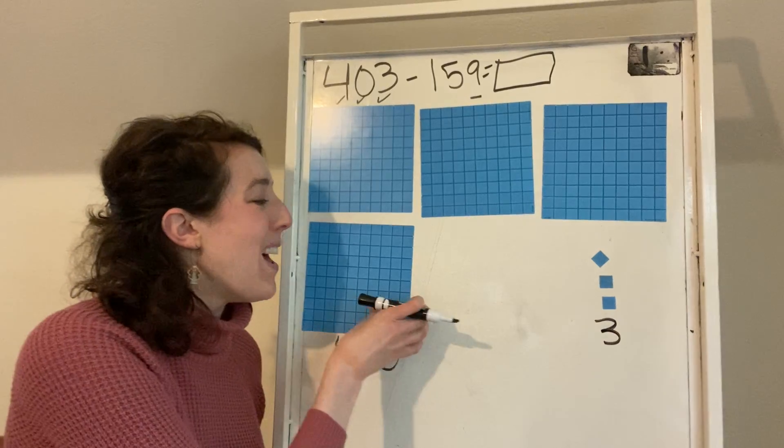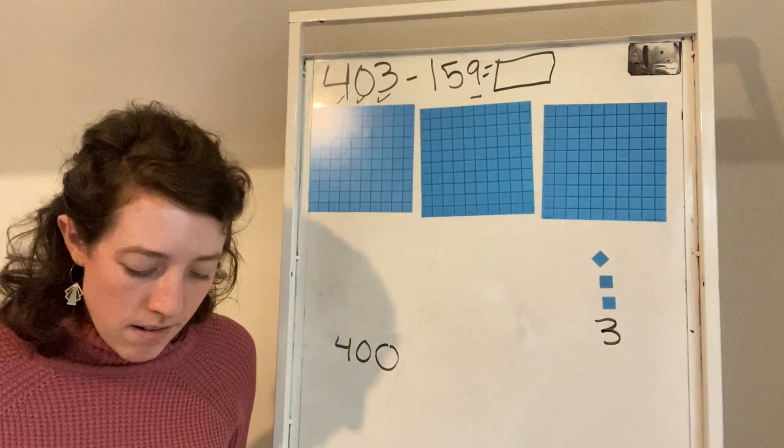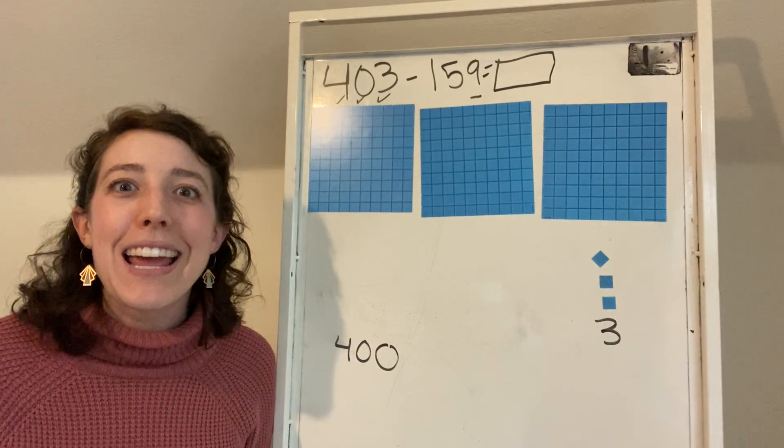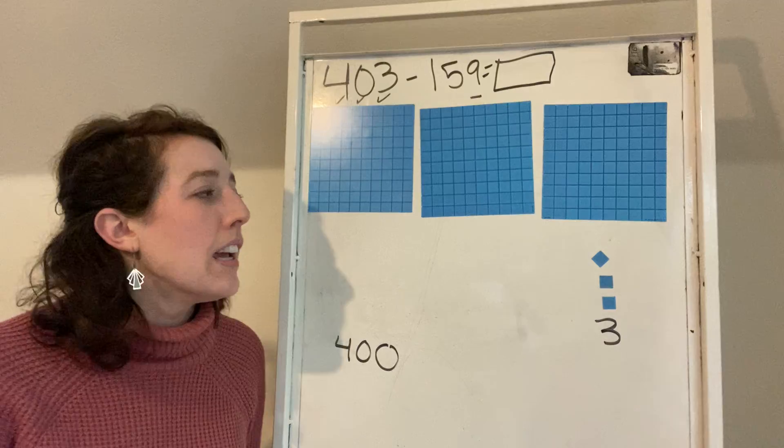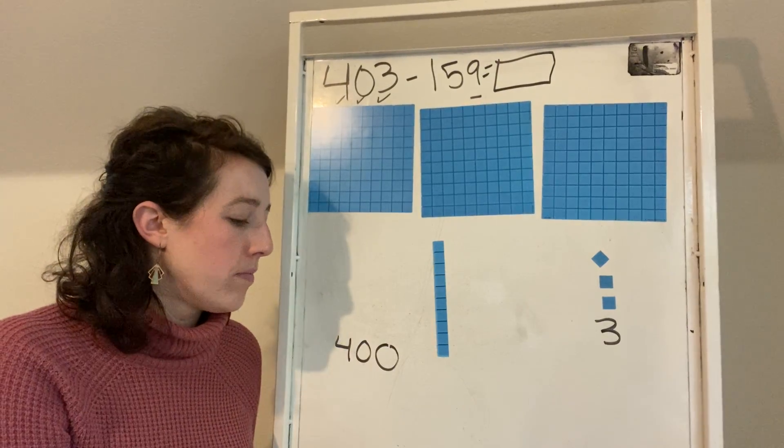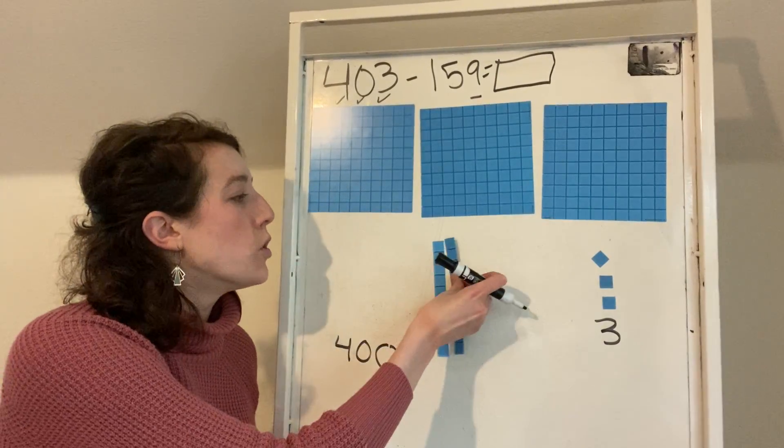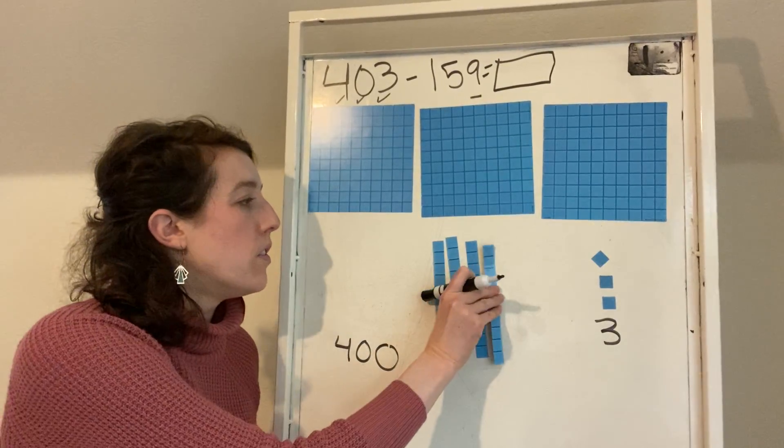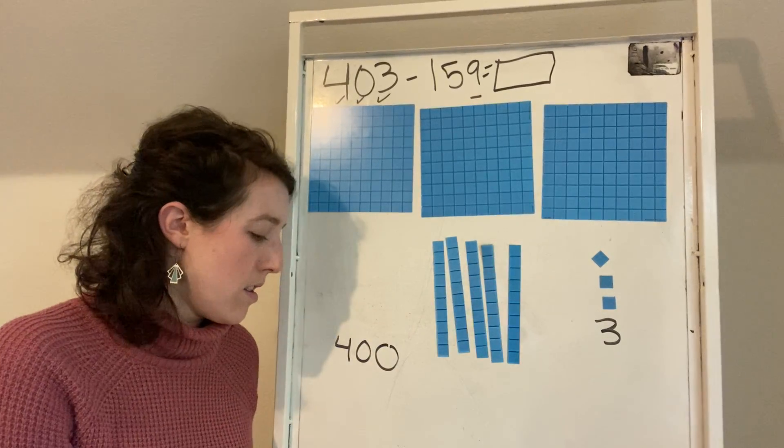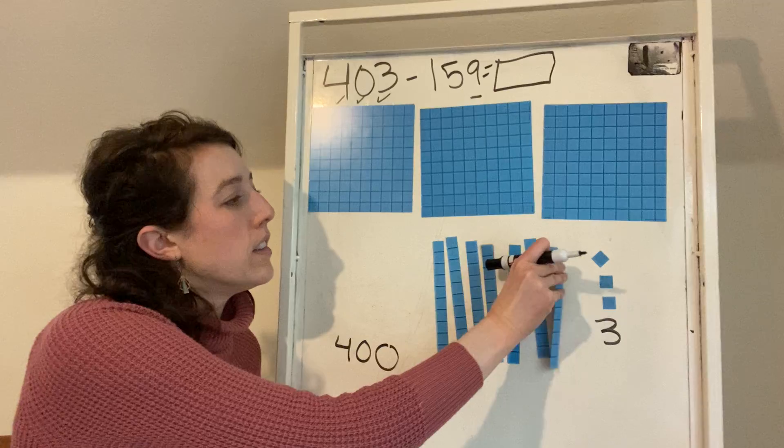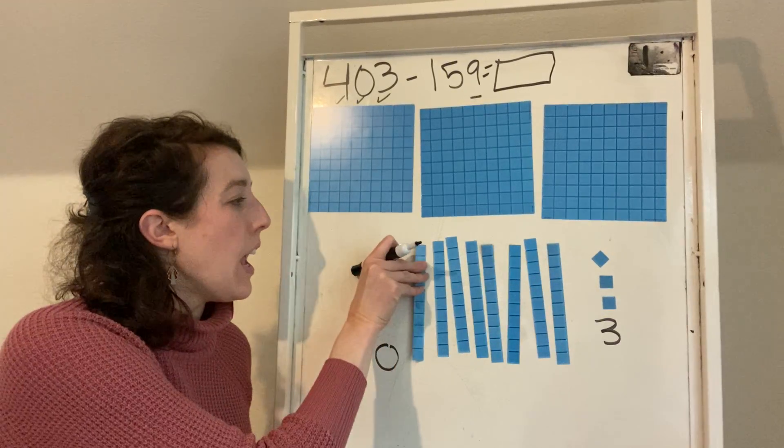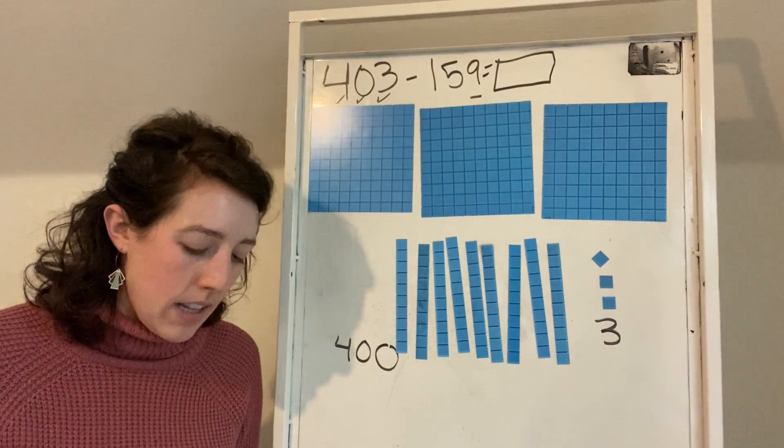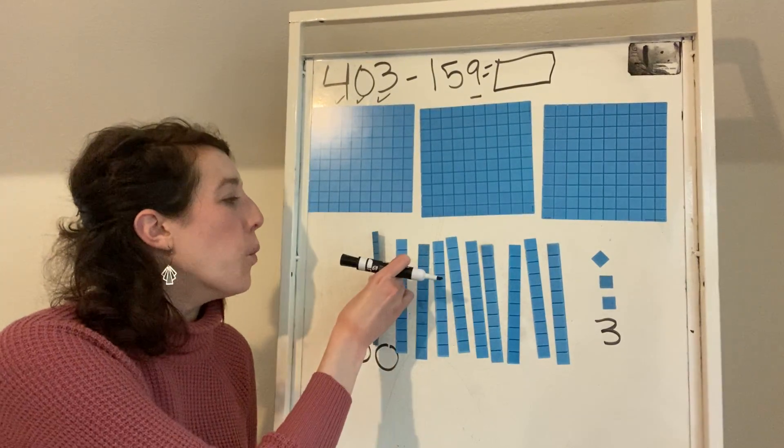So I need some ones. So I'm going to take my 100. And we are going to count out 10 tens together. Count with me: 10, 20, 30, 40, 50, 60, 70, 80, 90. And finally, you guys are being so patient. 100.